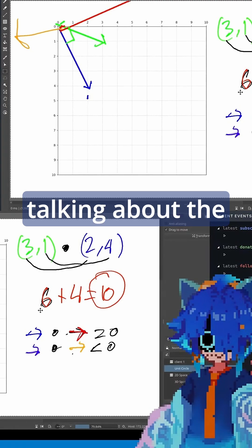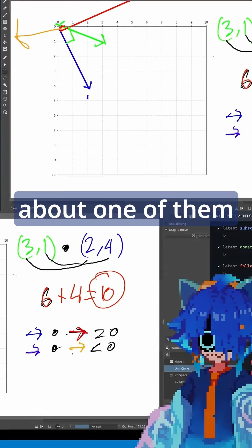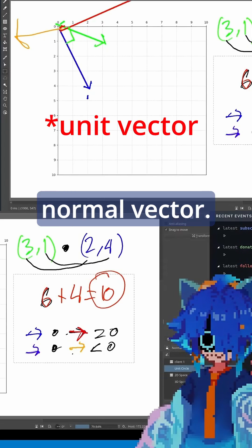Instead of talking about the full vectors, let's instead talk about one of them being a normal vector.